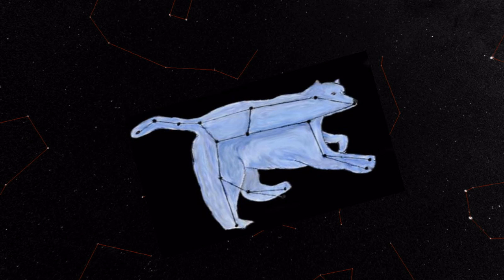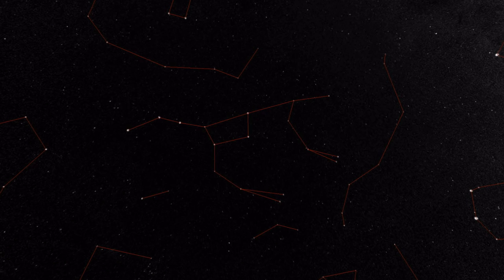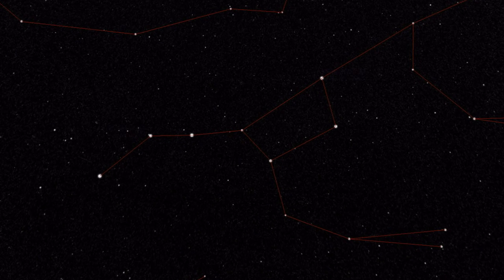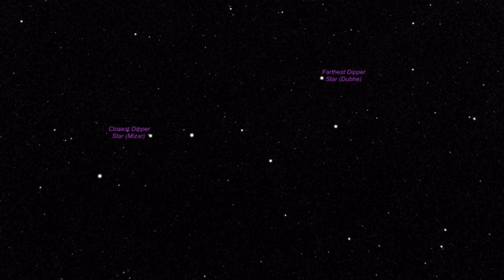On the two-dimensional sky we see, the stars in the Dipper look pretty close together. But if we could travel to the Dipper stars, it would take almost twice as long to get to the farthest one as to the nearest.